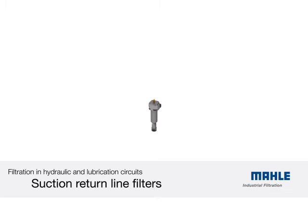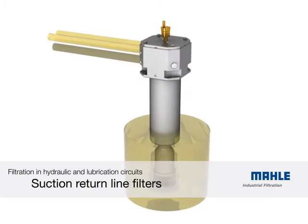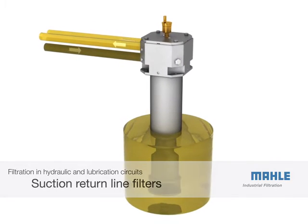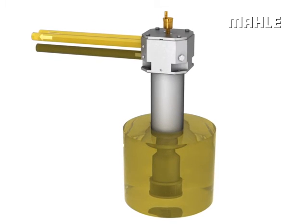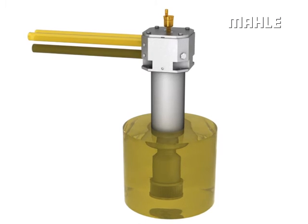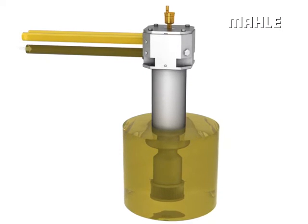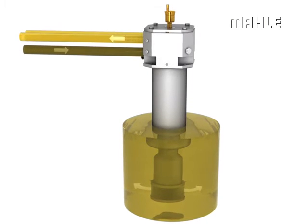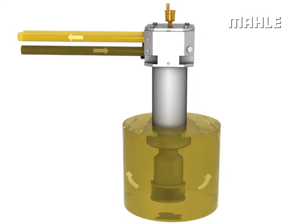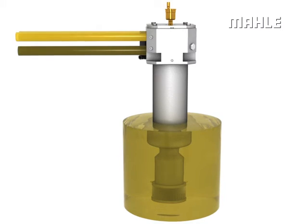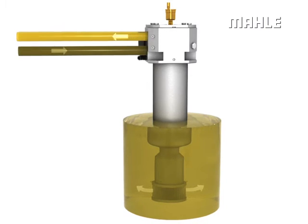Suction return line filters are the preferred filters for use in mobile equipment. The return flow is directed through the filter element. A portion of the filtered oil is drawn in by the pump, and the remaining oil flows through the counterbalance valve into the tank.